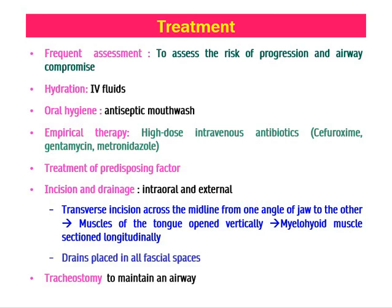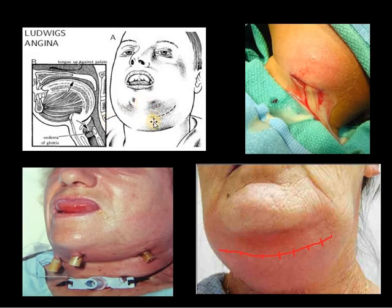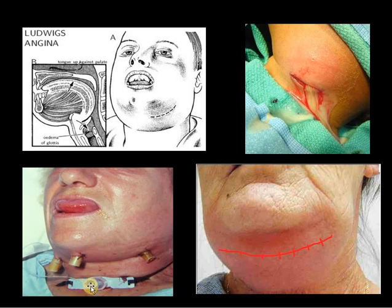It is not a simple drainage — tracheostomy is performed to maintain the airway whenever the person is in respiratory distress. You can see the incision being made to drain the region; here is a small incision for a small abscess with pus coming out. Drains are kept in multiple spaces and the person has been tracheostomized. The incision is made from one angle of the jaw to the other. Even with best treatment there is a high chance of mortality, so always open the abscess and perform a tracheostomy to resolve airway compromise.